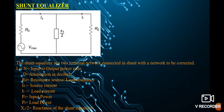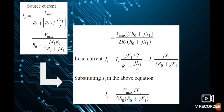In the series equalizer the reactance was 2X1, whereas in the shunt equalizer it becomes X1/2. Since it is a shunt connection, the current divides into source current and load current. The source current is given by Is = Vmax / (R0 + R0 ∥ jX1/2), which expands to Vmax / (R0 + jX1·R0 / (2R0 + jX1)).